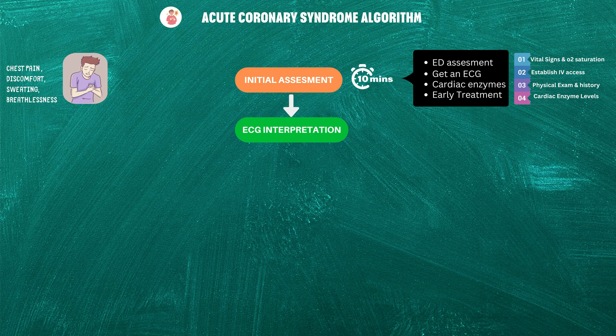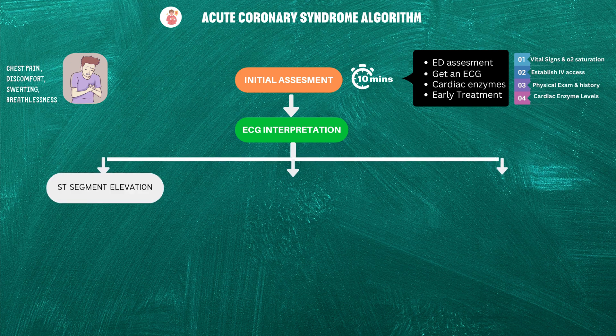Now here comes the ECG interpretation. The overall algorithm is based on ECG interpretation. First, if there is ST segment elevation on the ECG, start adjunctive therapies without delay.